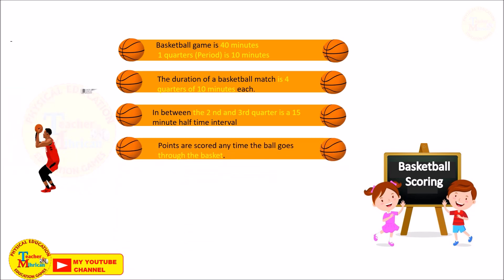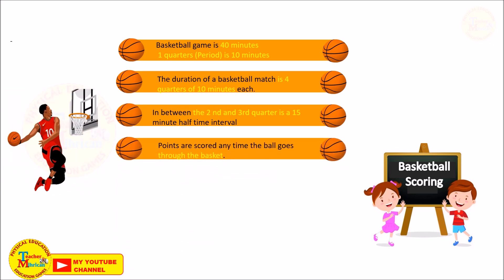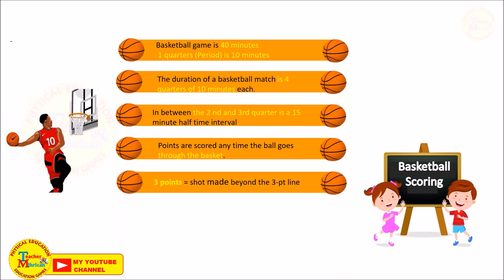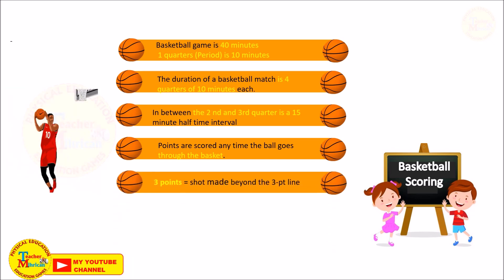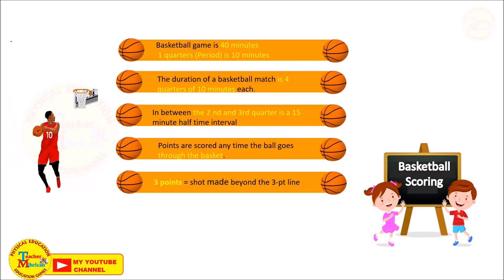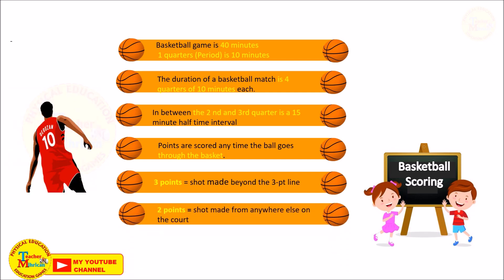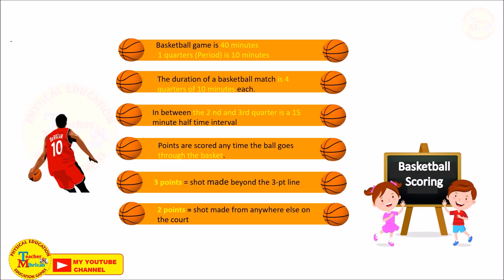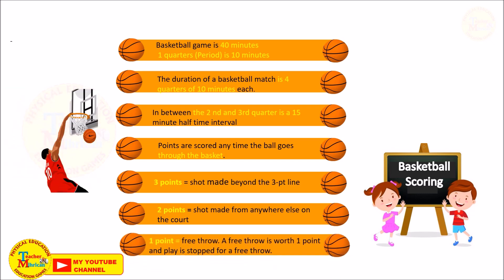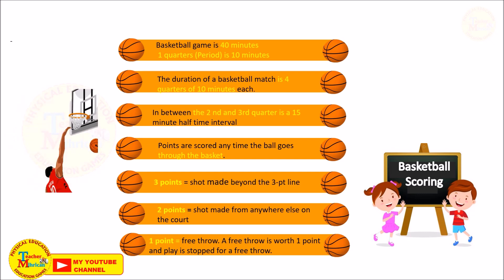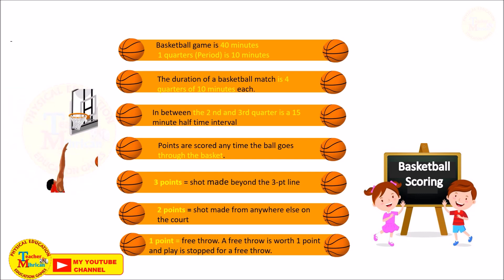Basketball scoring. Points are scored any time the ball goes through the basket. 3 points: a shot made beyond the 3-point line. 2 points: a shot made from anywhere else on the court. 1 point: a free throw. A free throw is worth 1 point and play is stopped for every throw.